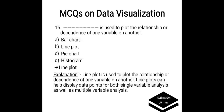Which is used to plot the relationship or dependencies of one variable to another? Options are: A. Bar chart, B. Line plot, C. Pie chart, D. Histogram. Correct answer is Line plot. Line plot is used to plot the relationship or dependencies of one variable on another. Line plots can help display data points for both single variable analysis as well as multiple variable analysis.